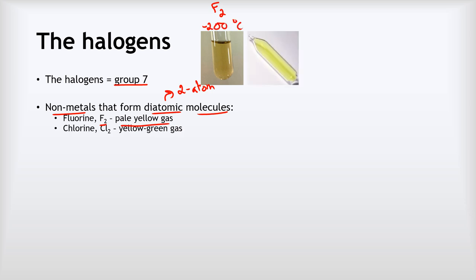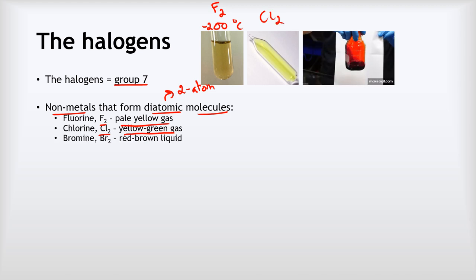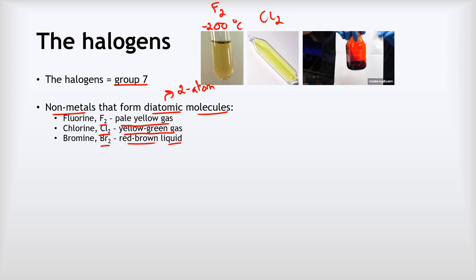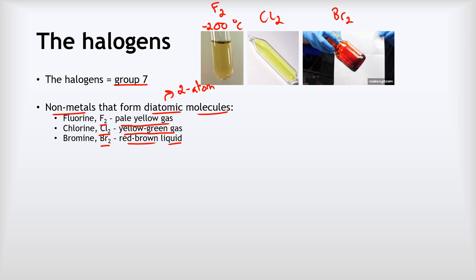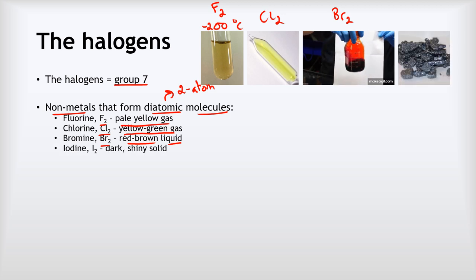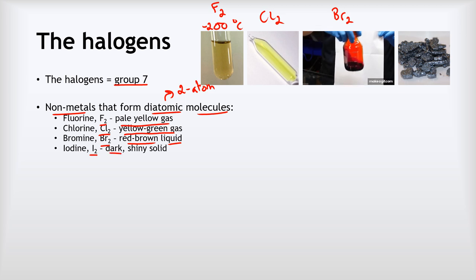Our next one down is chlorine, Cl2, which is a yellow-green gas and we see that here in that vial. Then we've got bromine, Br2. This is a red-brown liquid, one of only two liquid elements, the other being mercury. Here's our bromine, Br2, and you can see that really deep rich reddish-brown colour of the bromine sloshing around in that bottle. And the last one is iodine, I2, which is a dark shiny solid.